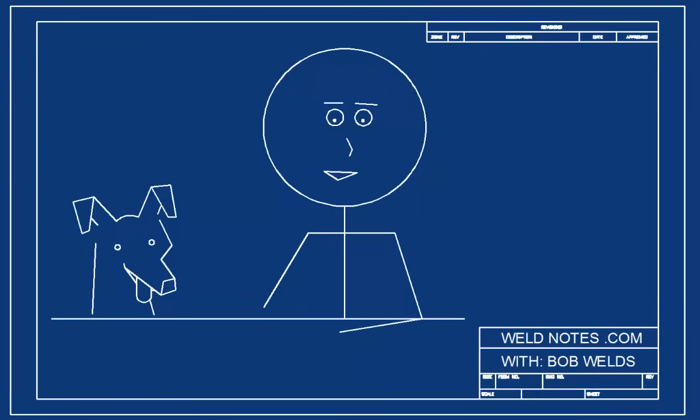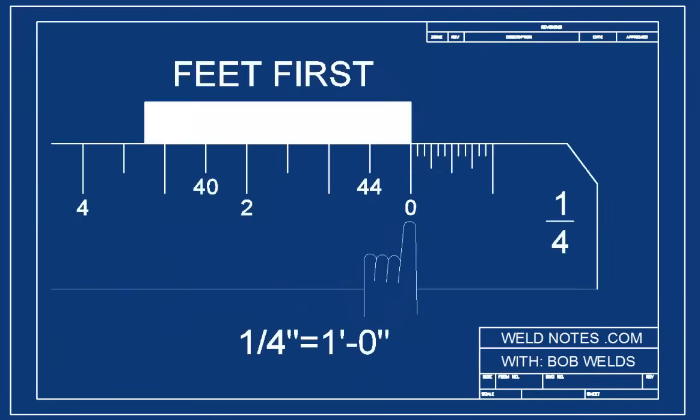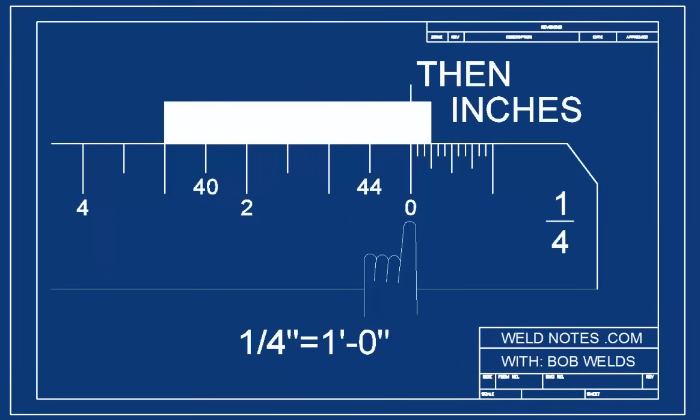So, let's dive in and take some measurements. When we measure with an architect's scale, we'll first measure the number of feet. Then, slide the ruler over and measure the inches. Here, I'll show you.